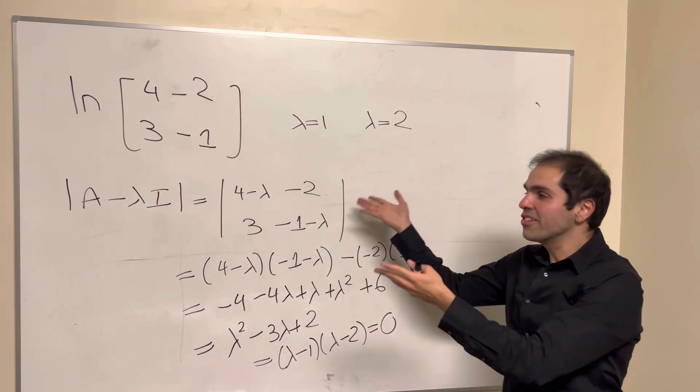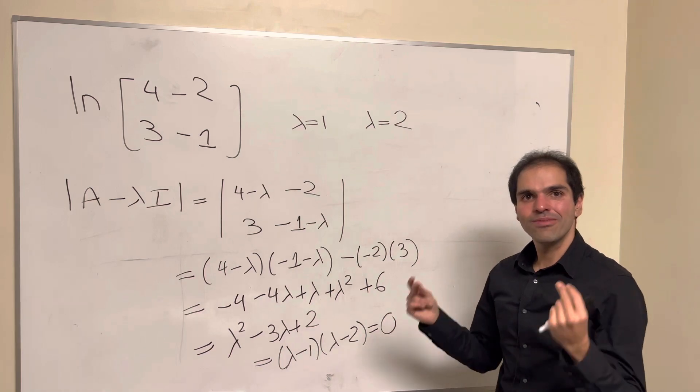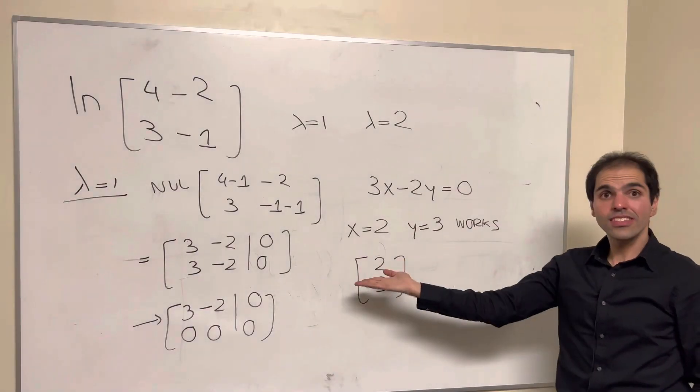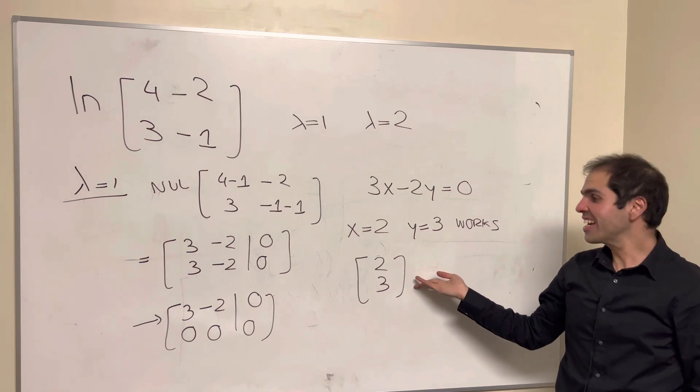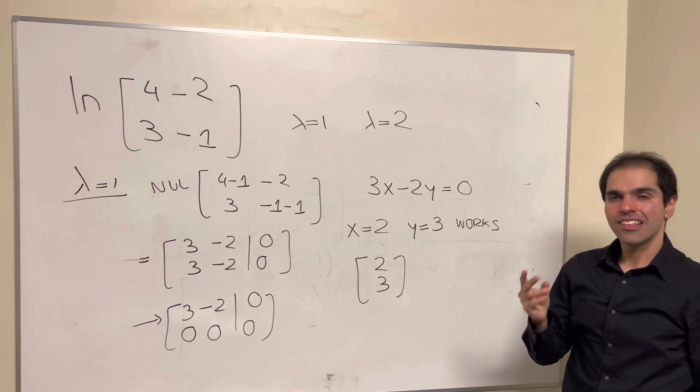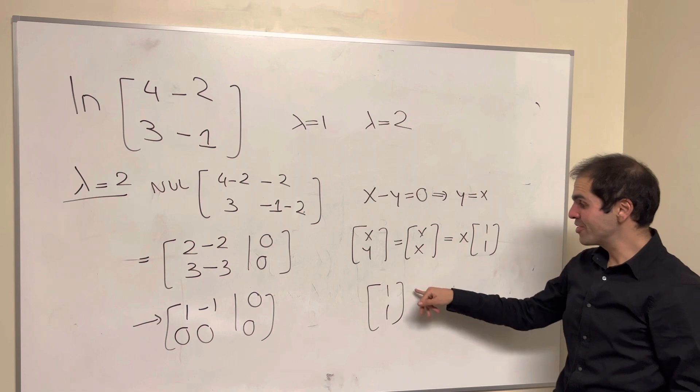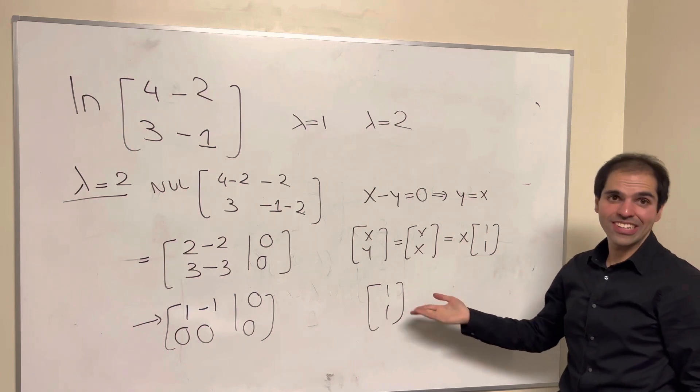Now for the eigenvectors, here are the details if you're interested. So this is for lambda equals 1, where you find one eigenvector is 2, 3, and for lambda equals 2, you find that one eigenvector is 1, 1.